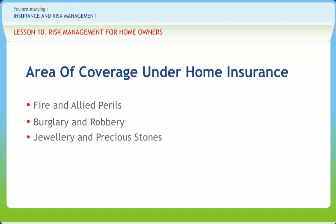Jewelry and precious stones have become an integral part of our lives for any occasion. Jewelry kept in specified bank lockers is covered, and a list of items with their value must be provided along with a valuation certificate. Next is plate glass: when any fragile items like fixed plate glass are damaged during the policy period, it is covered against such damage.